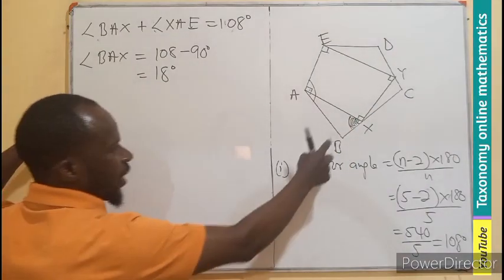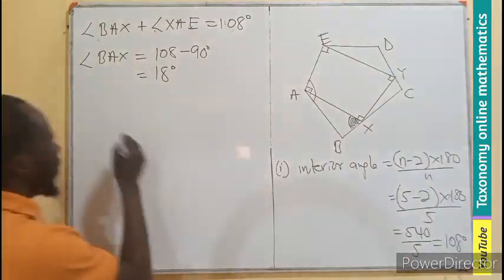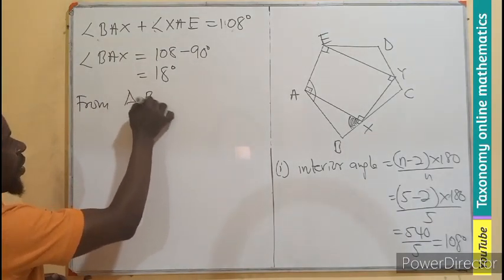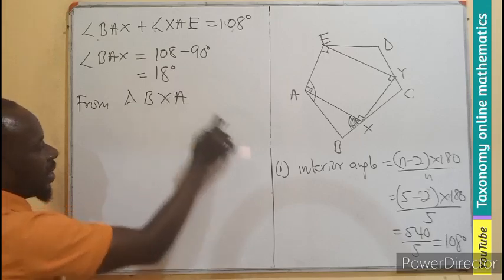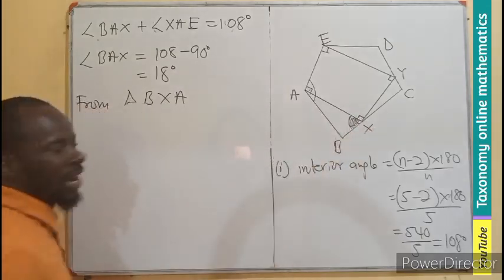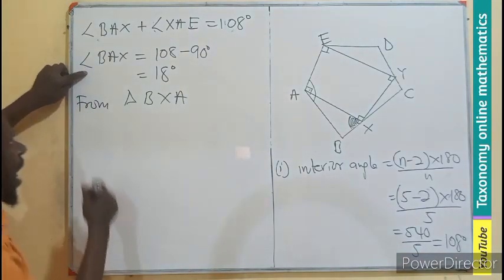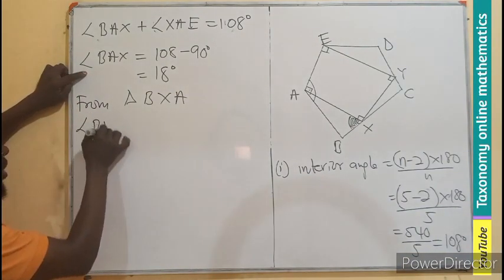So now let's see how we can find what the question is asking for. So let's see, from the triangle BXA, BXA, this small triangle we are seeing there. I want to describe all the angles. The very angle we have here. The angle BAX,